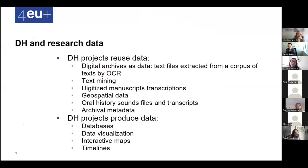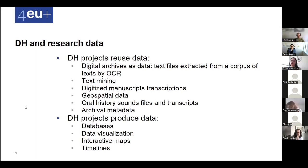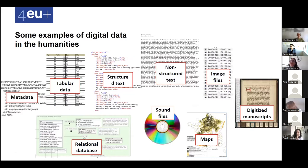What's the link between digital humanities and research data? DH projects can be distinguished into several types. Some reuse data — like digital archives, text files extracted by OCR or text mining, digitized manuscript transcriptions, geospatial data, oral history, archival metadata. Other DH projects produce data — like databases, data visualizations, interactive maps, and timelines. The field of digital humanities is very large.